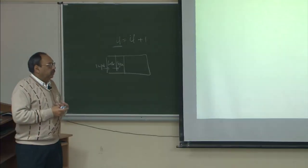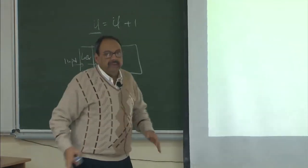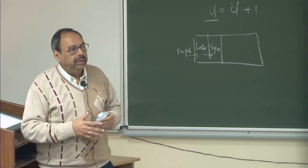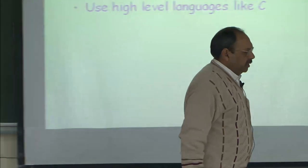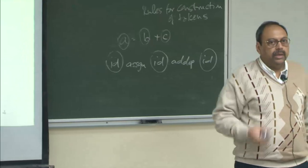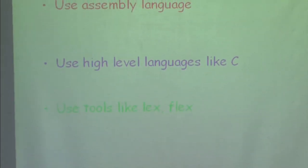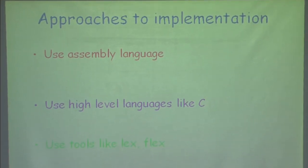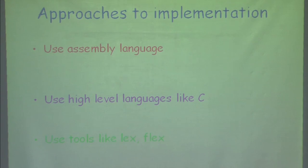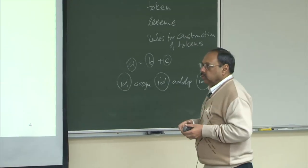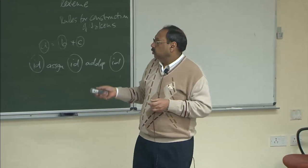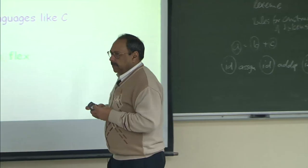How do we implement a lexical analyzer? There are three approaches: first, since we are doing low-level IO and want this process to be very efficient, we can program it in assembly language. Another option is to use a high-level language like C. Or we can use tools like lex or flex, where we just write specifications and implement the lexical analyzer. Remember that we are not only worried about functional correctness of a phase, but also its speed — how fast it can read tokens. This phase involves a lot of disk IO, so we do not want it to become a bottleneck.